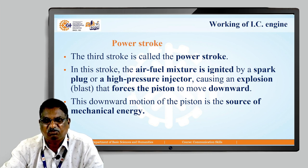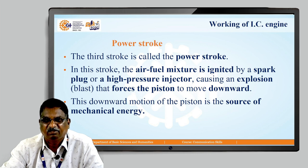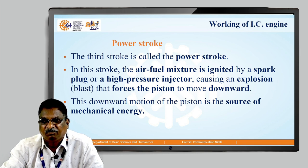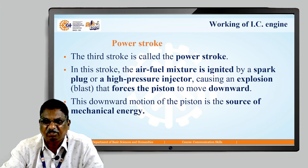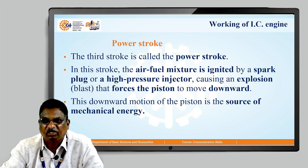The third stroke is called the power stroke. In this stroke the air-fuel mixture is ignited by a spark plug. The spark plug is activated once the air-fuel mixture is compressed, and the mixture is ignited, causing an explosion that forces the piston to move downward. Due to the explosion inside the cylinder, a high amount of pressure is created in the downward direction, forcing the piston down. This downward motion of the piston is the source of mechanical energy; therefore, this stroke is called the power stroke.